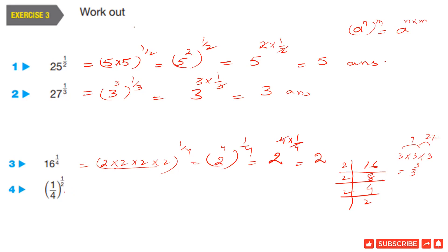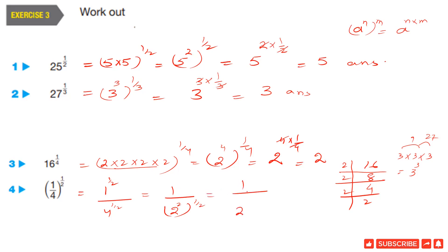Question 4: (1/4) power 1 by 2. Here we have a fraction inside the bracket and the power is also a fraction. We open the bracket — this power applies to both the numerator and the denominator — so we rewrite it as 1 power 1 by 2 upon 4 power 1 by 2. The power of 1 is always 1. At the bottom, 4 equals 2 power 2, and applying the third rule of indices gives 1 upon 2 power 2 times 1 by 2. The two cancels, leaving 1 upon 2 as the answer.